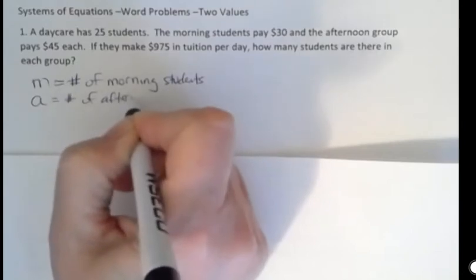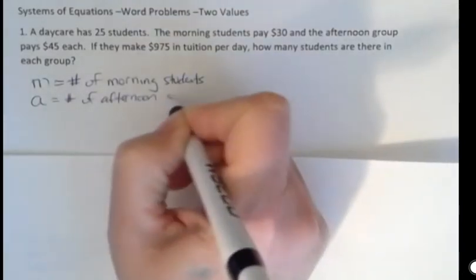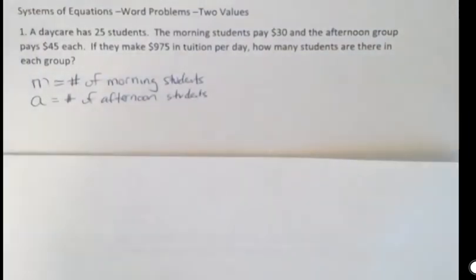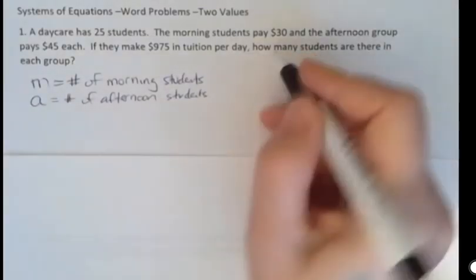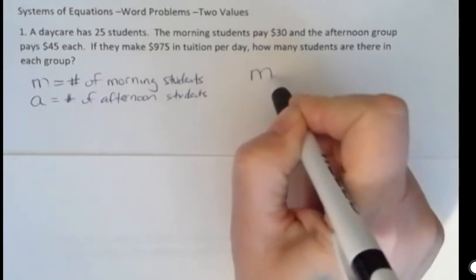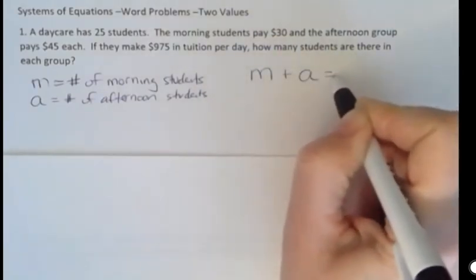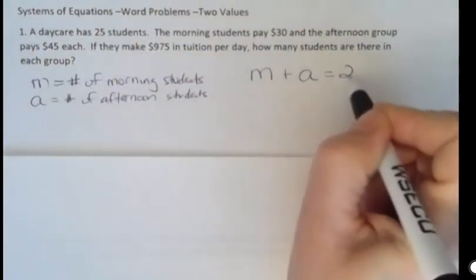Of course you can just use X and Y, but sometimes if I can use variables that make sense to me, I kind of know what I'm talking about. One of the equations is always just strictly talking about the number of items. So I have M number of morning students and I have A number of afternoon students and altogether I have, given in the problem, 25 students.